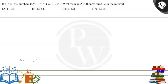Hello. Let's read the question. If x belongs to the set of real numbers, the numbers 5 raised to (1 plus x) plus 5 raised to (1 minus x), comma a divided by 2, comma 25 raised to x plus 25 raised to minus x form an arithmetic progression. Then a must lie in the interval.